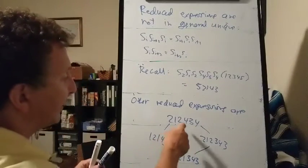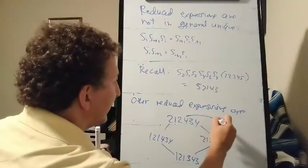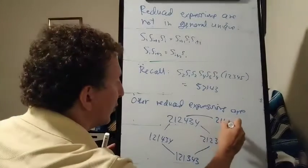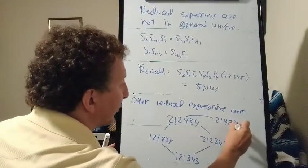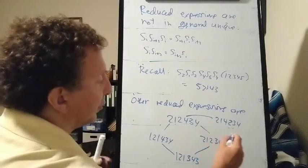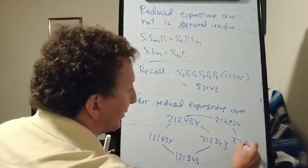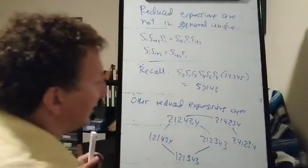And then the 2 and the 4 commute. So this could be replaced with 2, 1, 4, 2, 3, 4. And then the 4 and the 1 commute. And that can be replaced with 2, 4, 1, 2, 3, 4, etc.